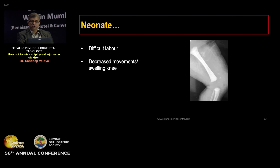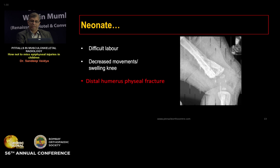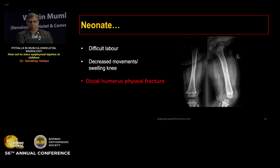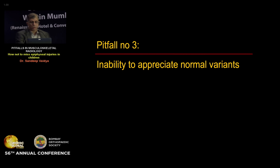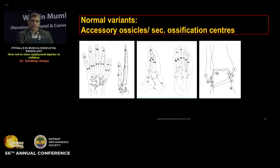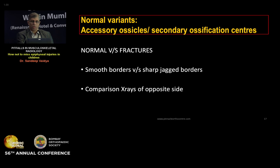A similar case involves the knee joint: swelling and restriction of movements in a neonate with a normal-appearing X-ray. However, looking carefully there is a bony flake anteriorly — this is actually the entire distal femoral epiphysis — a distal femoral physeal fracture. As seen on subsequent X-rays, this heals, consolidates, and finally remodels. Rule number two: when assessing plain X-rays in a child, visualize the bones present but also imagine the cartilage that is not seen.